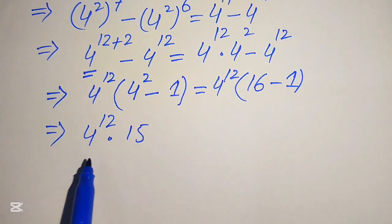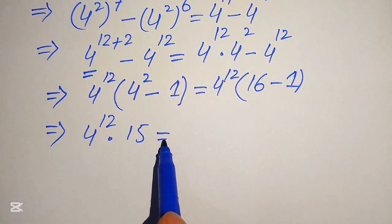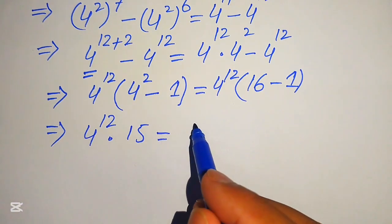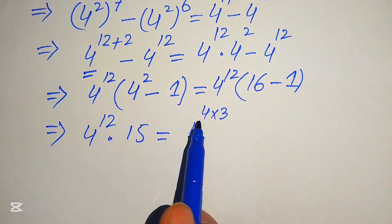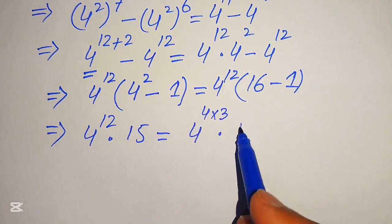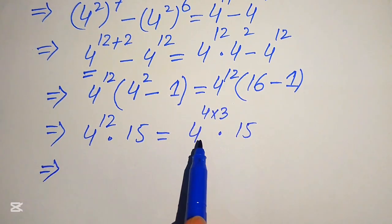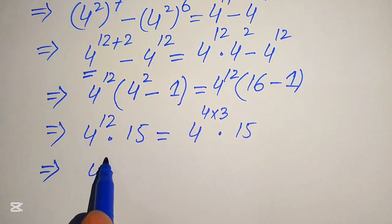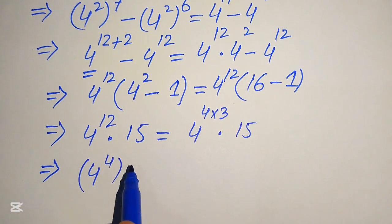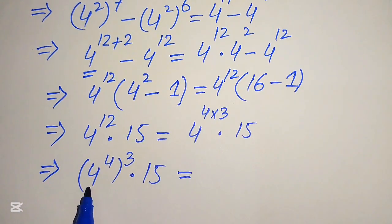Next, we break 4 to the power of 12 as 4 to the power of 4 times 3, since 4 times 3 equals 12, multiplied by 15. We move the 4 inside the term, writing it as (4 to the power of 4) cubed, multiplied by 15.